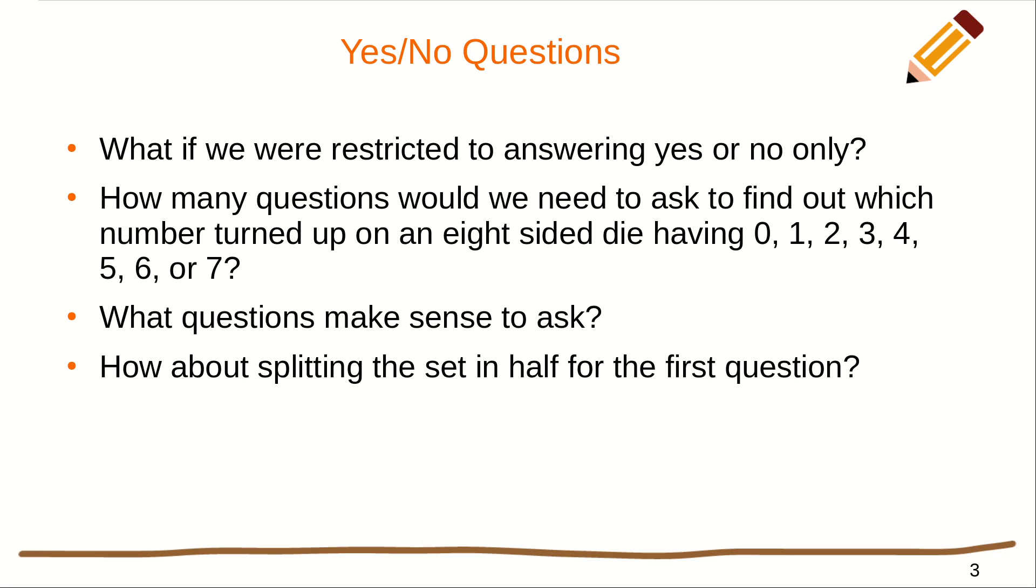And so, if the person says yes, I know it's in 4, 5, 6, or 7. If he says no, I know it's in 0, 1, 2, or 3. And so, I have just cut my number of possibilities in half. You could repeat this process again. Suppose he said it was in 4, 5, 6, or 7. And you'd ask, okay, well, is it in 6 or 7? And he'd say maybe yes. And so, then you'd ask, is it 7? And if he said yes, you'd know the answer was 7, obviously, right?